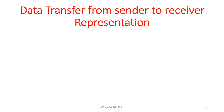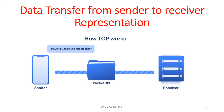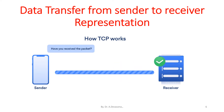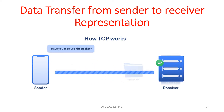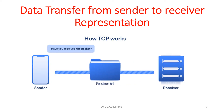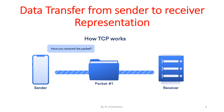Data transfer from sender to receiver is represented here. In this diagram, the data is available in the sender. It has to reach the receiver. Through TCP, the data is transferred from the sender and it reaches the receiver, as represented here.